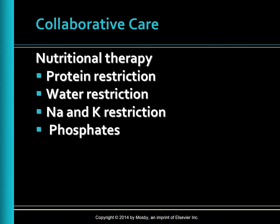High-potassium foods that should be avoided include oranges, bananas, melons, tomatoes, prunes, raisins, deep green and yellow vegetables, beans, and legumes. As kidney function deteriorates, phosphate elimination by the kidneys is diminished and phosphate intake must be restricted. Foods high in phosphate include dairy products such as meat, milk, ice cream, cheese, yogurt, and foods containing dairy. Many foods high in protein are also high in phosphate.